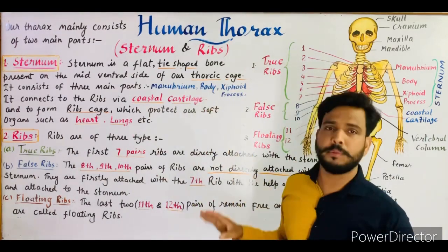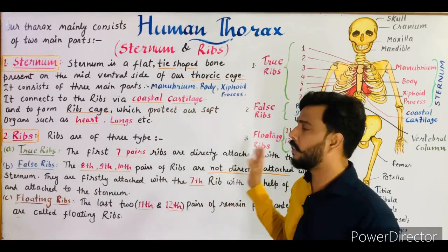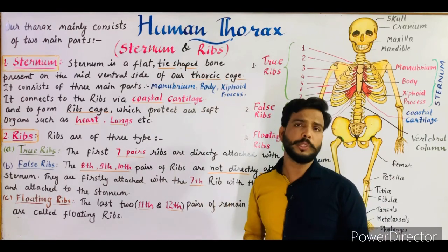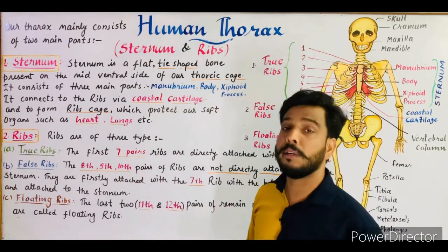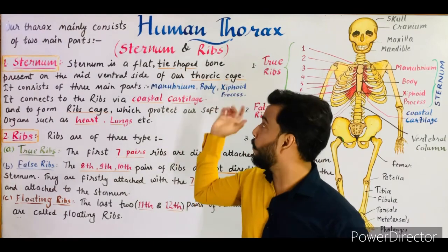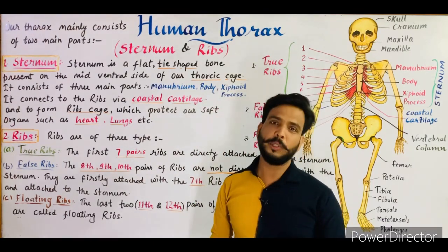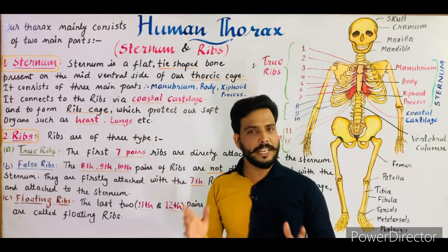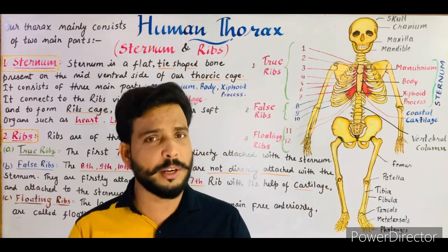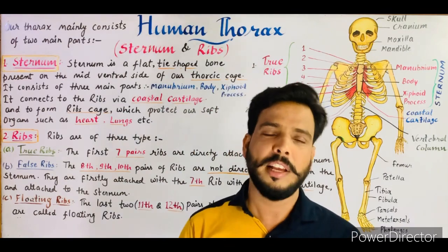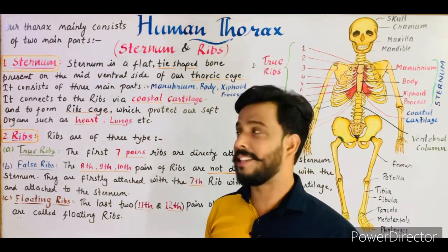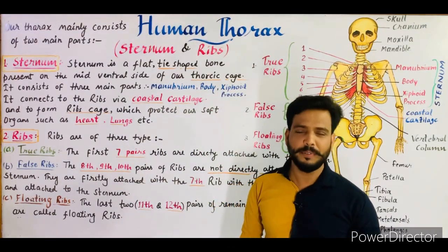That was all about the human thorax — the sternum and the ribs. I hope everything is very clear to you. We will talk about the functions of the human thorax, the sternum and the ribs, in the next part. If you have any questions, queries, or doubts, you may ask in the comment section and I will try my best to reply. Thanks for watching, have a good day.